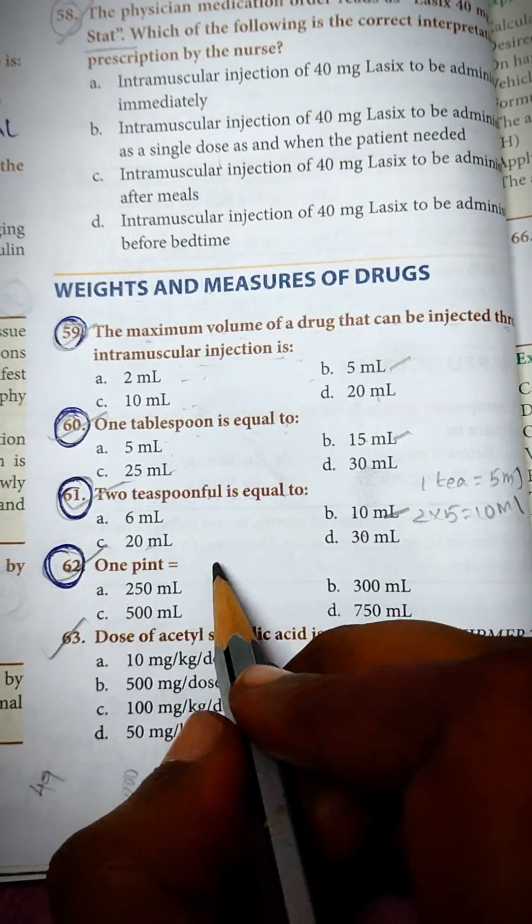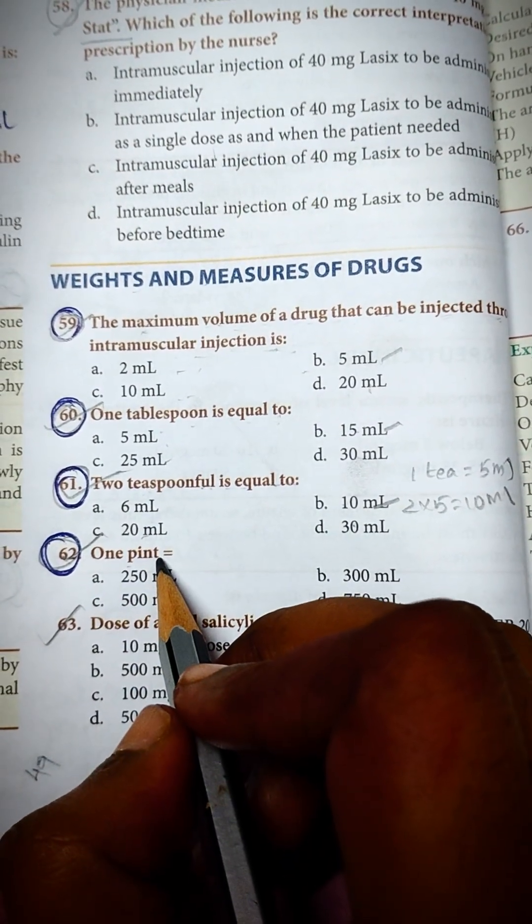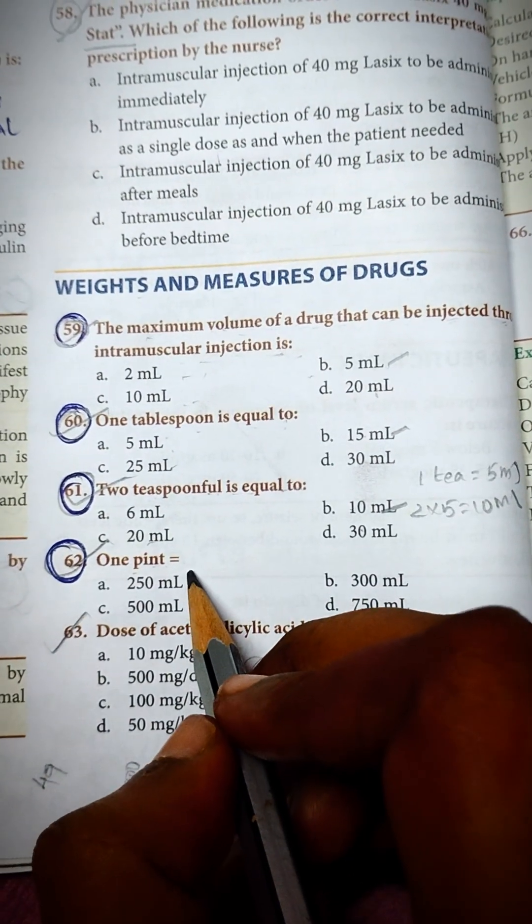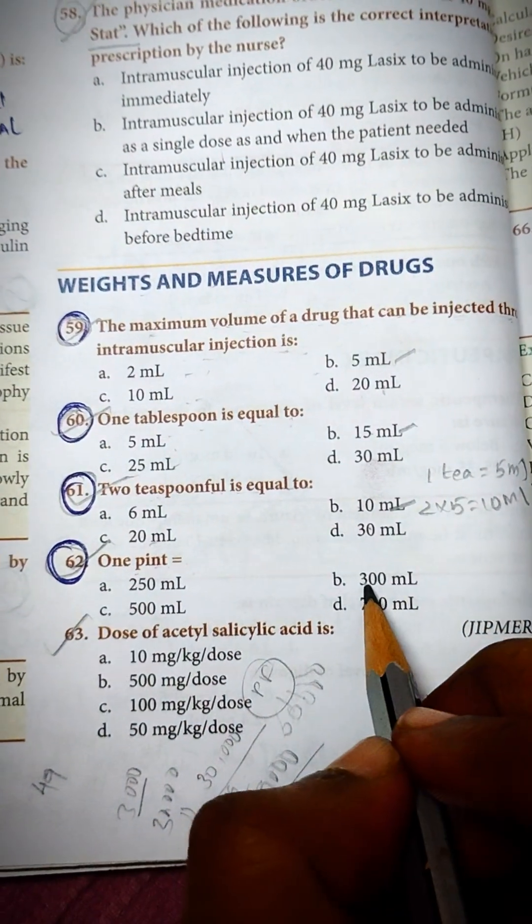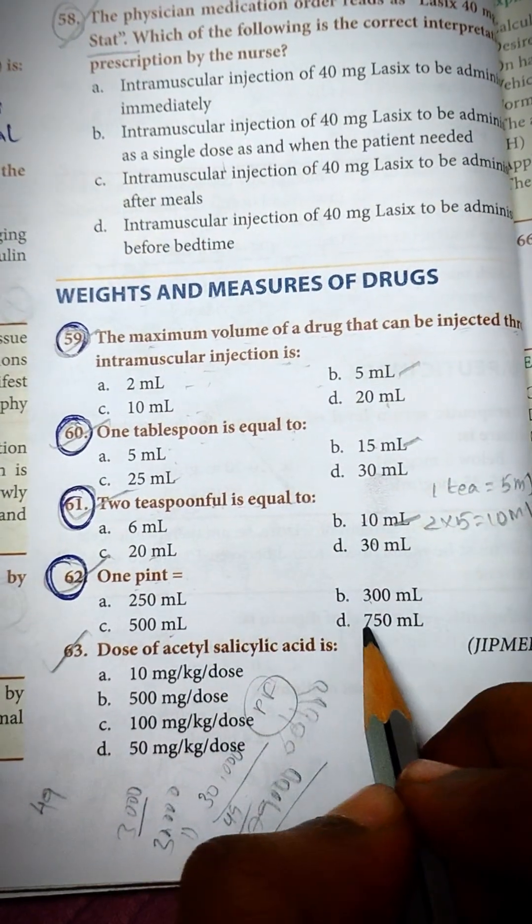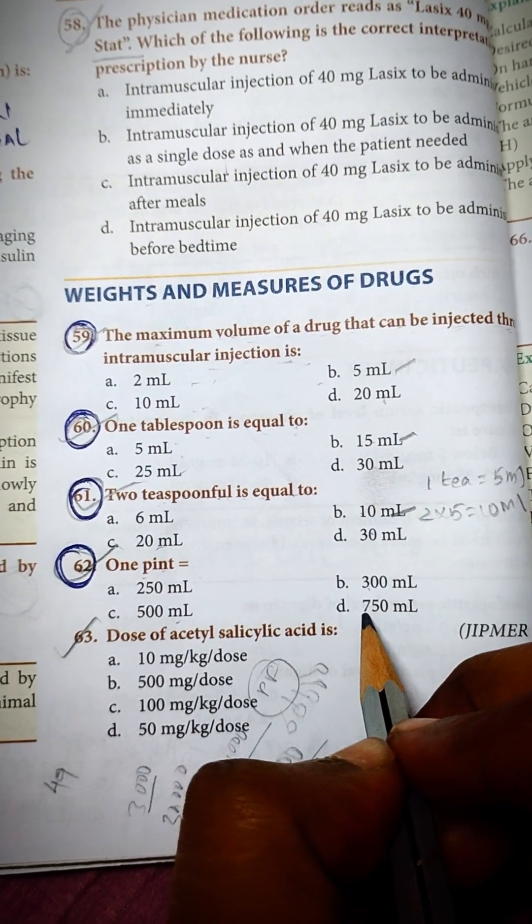Okay, then next question: one pint is equal to - one pint is equal: option a 250 ml, option b 300 ml, option c 500 ml, option d 750 ml. And the answer is option c, 500 ml.